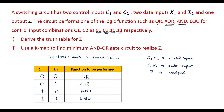Here we can see that C1, C2, X1, and X2 are all inputs. Though C1 and C2 are control inputs and X1 and X2 are data inputs, these four together are the inputs where Z is the output. Now we will write the truth table — that is, derive the truth table for Z.